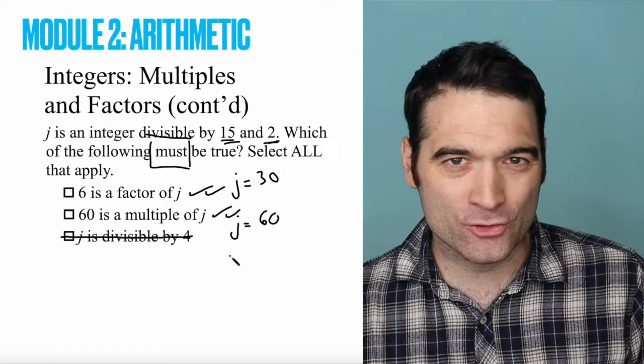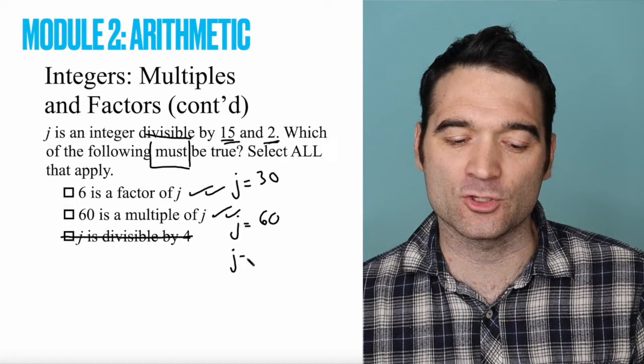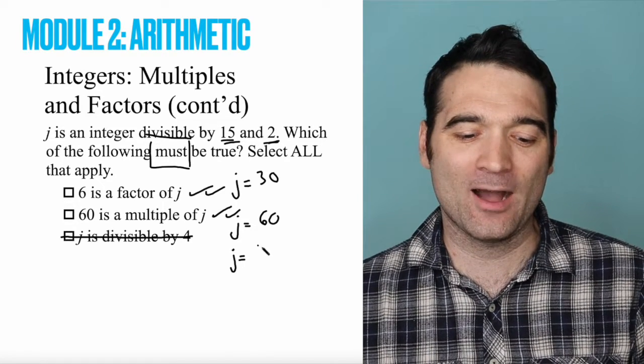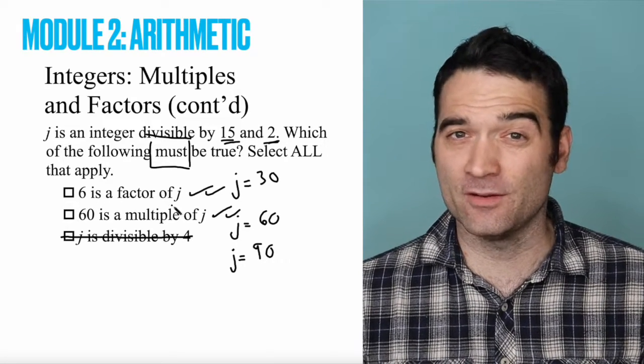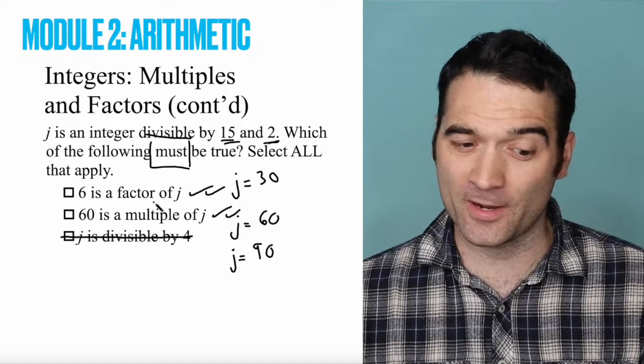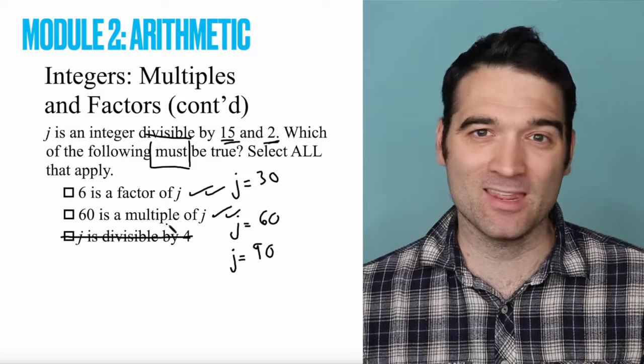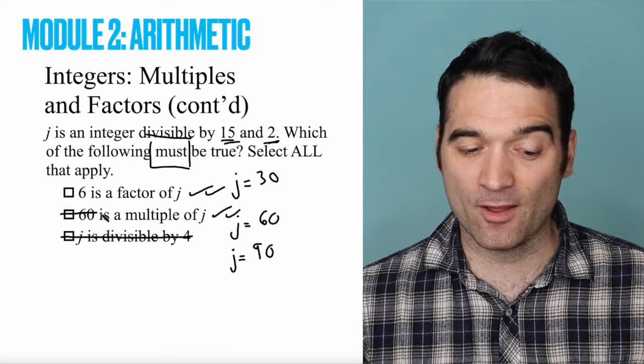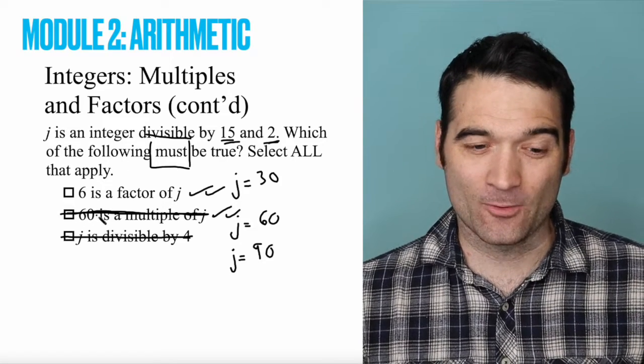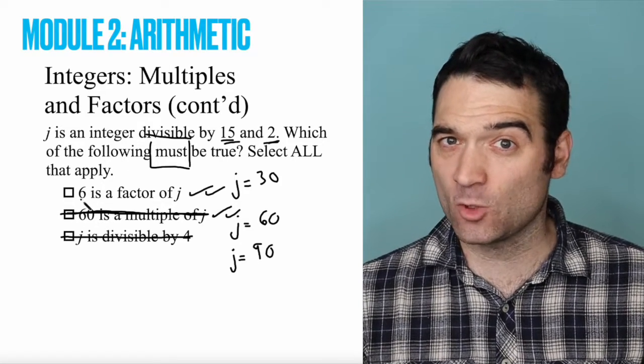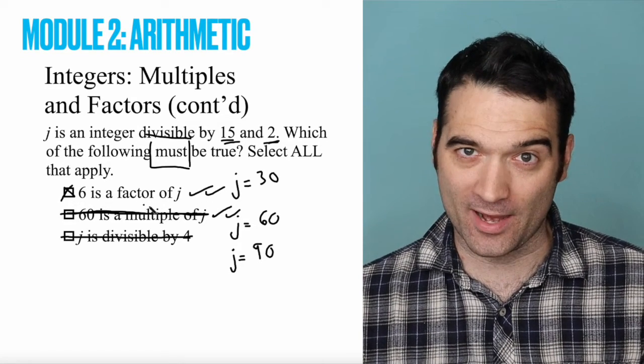And I'm going to encourage you to try one more case. Let's try one more number that J could be. How about 90? Aha. Is 6 a factor of 90? It is, according to our calculator. Is 60 a multiple of 90? It is not. And because I've found one counterexample, it's out. Right? And so as I said on these questions, at least one of them needs to be correct. That way, I know that this one is correct.